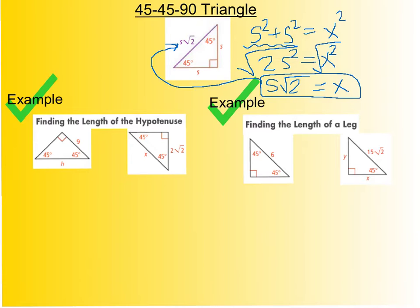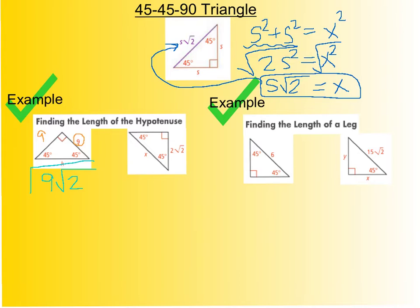I'm going to do four examples: two for finding the hypotenuse and two for finding the leg. In the first example, they tell me the leg is 9. The other leg would also be 9, but they're asking for the hypotenuse. From our pattern, the hypotenuse is always the leg times radical 2, so the hypotenuse equals 9 radical 2. That's all there is to it.